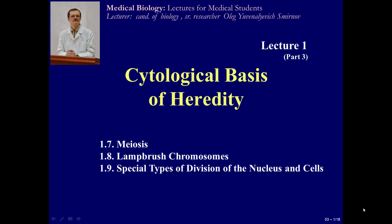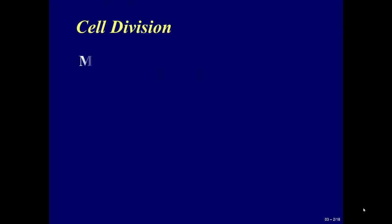Cytological basis of heredity, Part 3. Meiosis, lampbrush chromosomes, special types of division of the nucleus and cells. Cell division — meiosis.